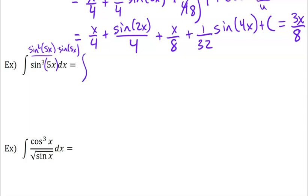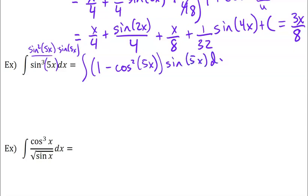So I've got the quantity of 1 minus cosine squared of 5x times a sine of 5x, dx. So now, from here, if I distribute this, the integral of sine of 5x — that's no problem, I can do that with a u-substitution with a coefficient. But the cosine squared — now I've got cosine as my u, this is a power rule, quantity squared, and then this is part of my du. But again, I need to look at the 5 that's happening.